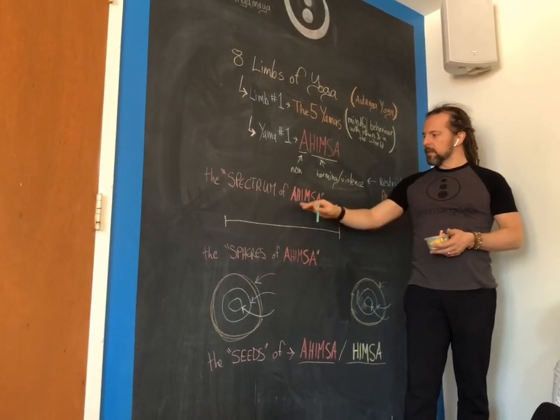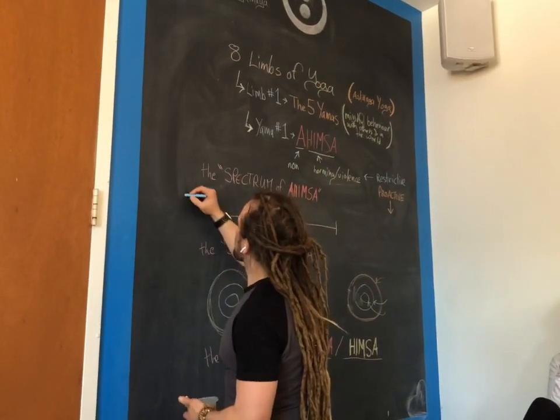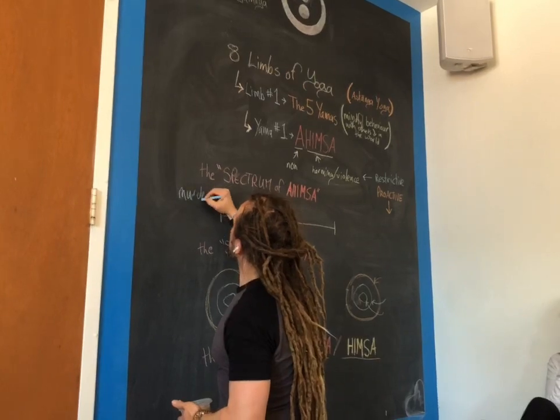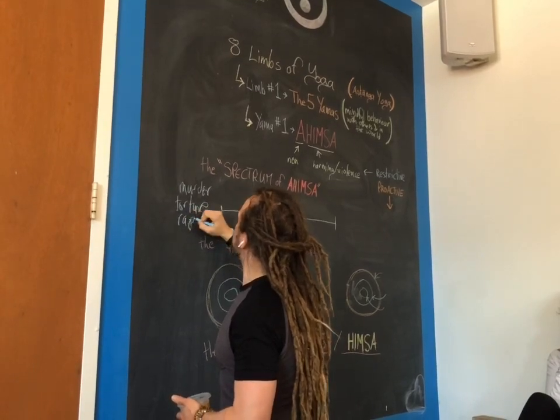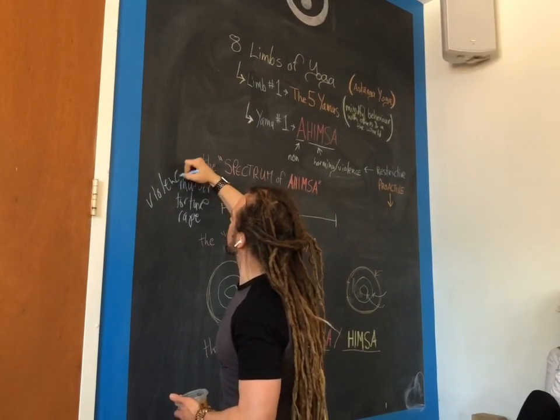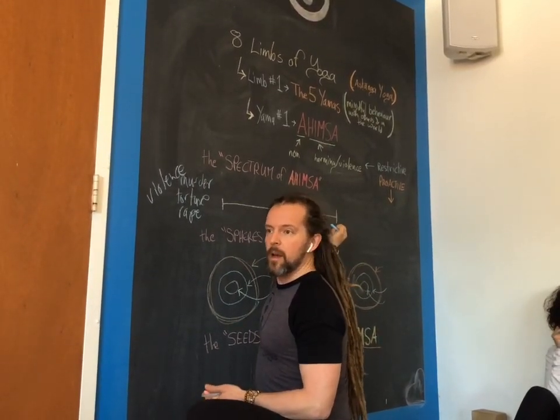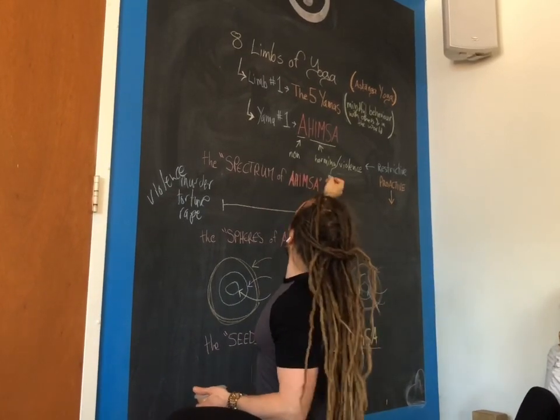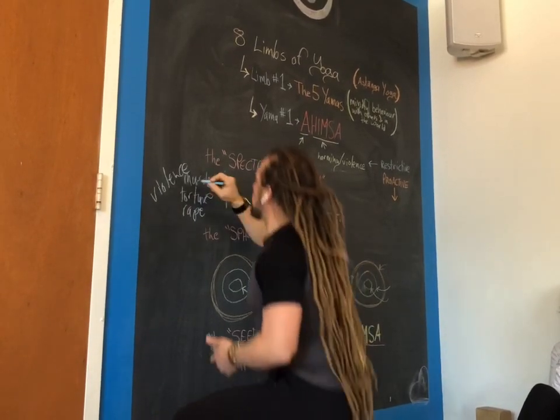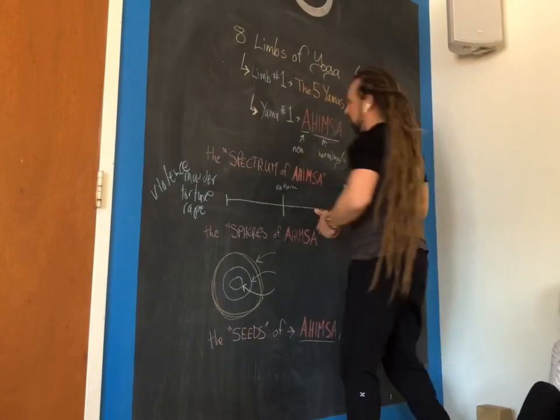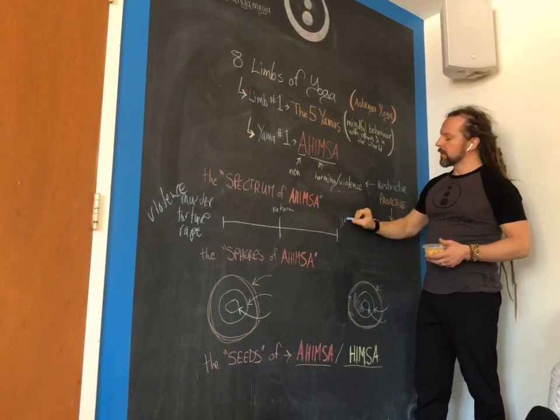All of us have things that we do which fall towards one end of the spectrum and other things that we do which are closer to the other end of the spectrum. One end of the spectrum, the spectrum of ahimsa, is terrible things. Terrible things like murder and torture and rape and all kinds of violence. There is tons of stuff that is on this side of the spectrum. And on the other end of the spectrum, what's on the other end? Not doing no harm. Non-harming is the middle of that spectrum. The opposite of murder and rape and torture is unconditional love.